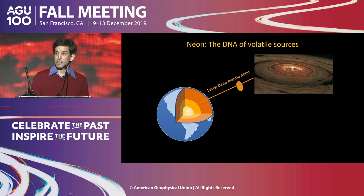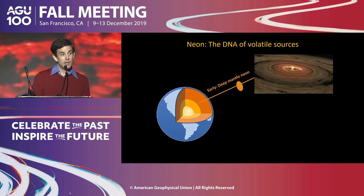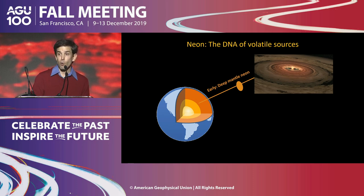We used to think most volatiles on Earth were delivered after the moon-forming impact and that there were no memories of previous events preserved in the present-day mantle. But as we look at the mantle today, we find clues recording how sources of Earth's volatiles changed during accretion. Isotopic measurements of neon reveal that neon in the Earth's deep interior was accreted from nebular gas, whereas neon in the atmosphere traces its lineage to carbonaceous meteorites.